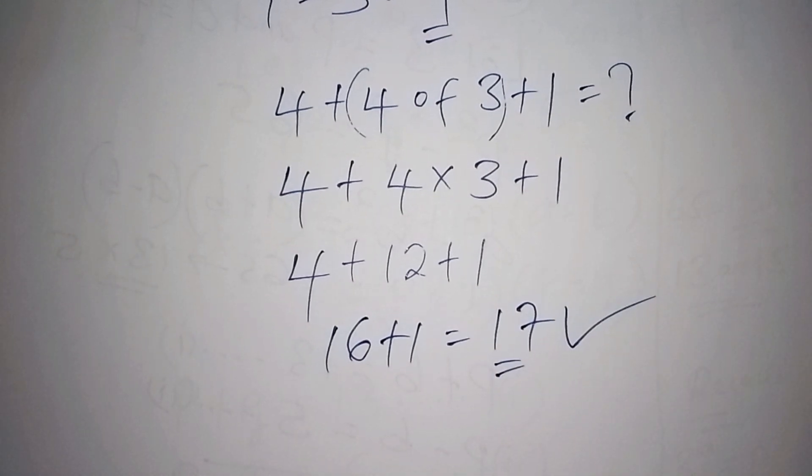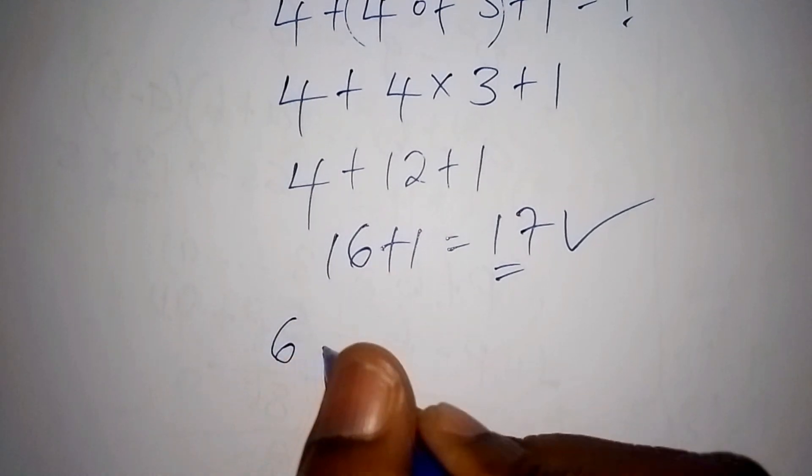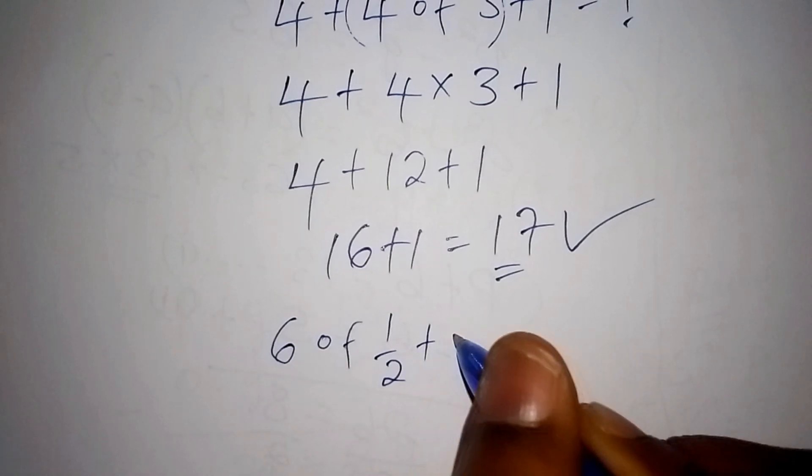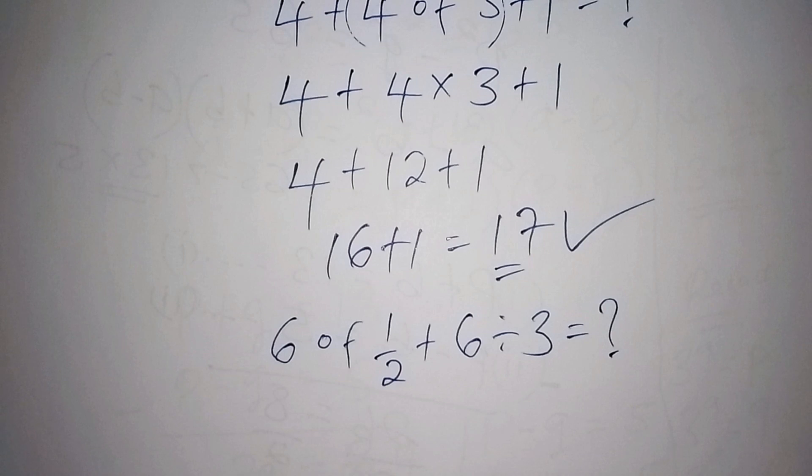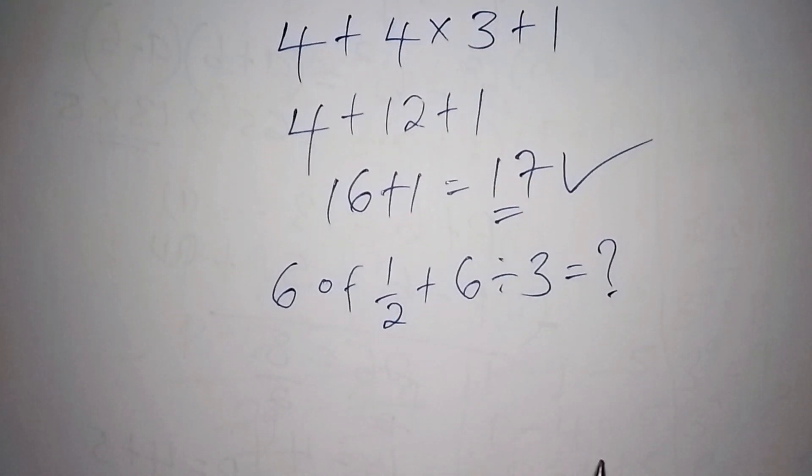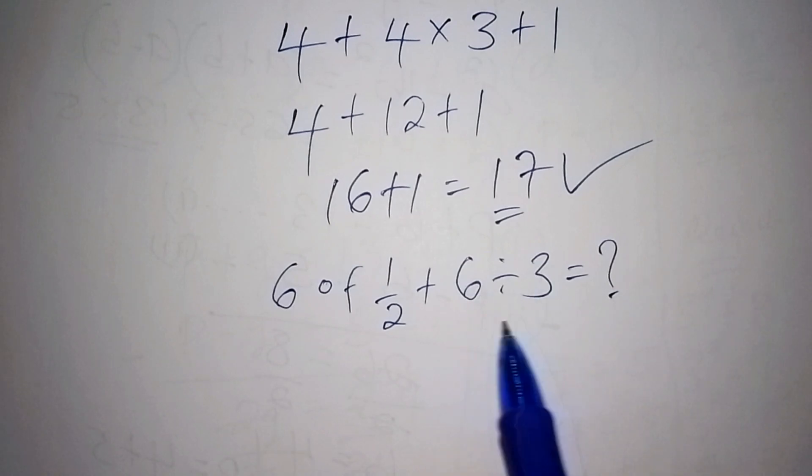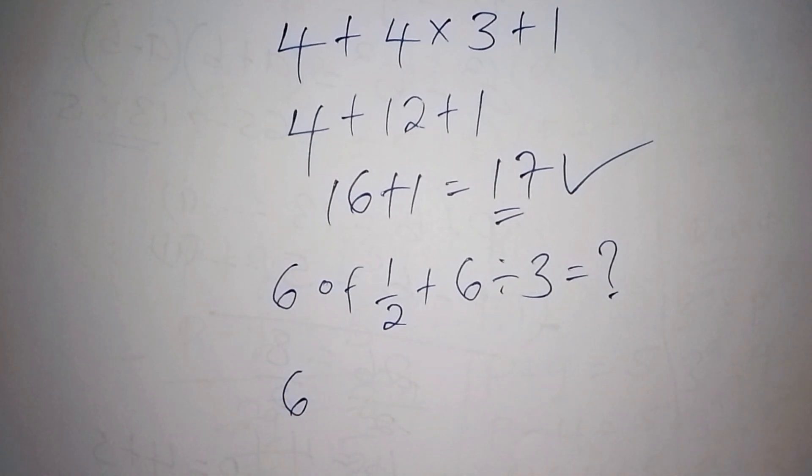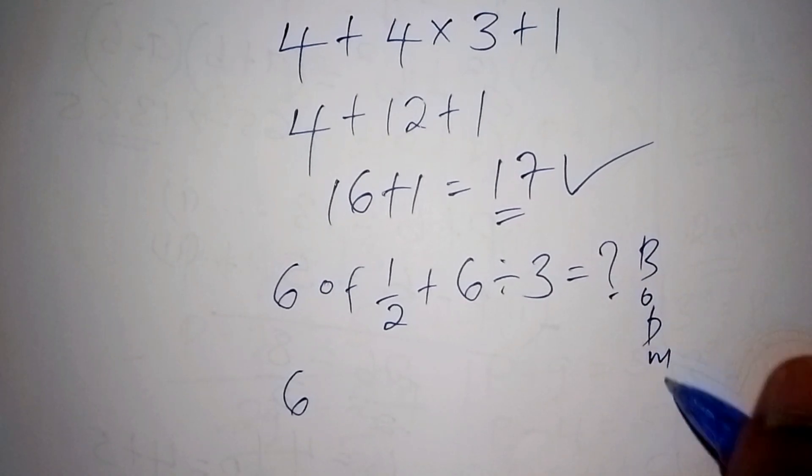So finally the last one for 'of' that deals with the fraction. Now we have 6 of a half, then plus 6 divide by 3. So what is the answer in this case? This one is simple as long as you know the rule of the game. So here we shall work out the division sign. So we shall have 6, don't start the 'of' first until you're done with the division, according to our BODMAS.